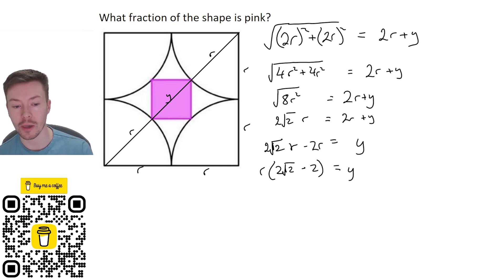Now I need to work out the area of this square, so I'm going to call the side length x because I need to work that out. So again x squared, this is the next part, x squared add x squared, square rooted has to be equal to y, because that's the diagonal again using Pythagoras, and y is r lots of 2 root 2 minus 2.